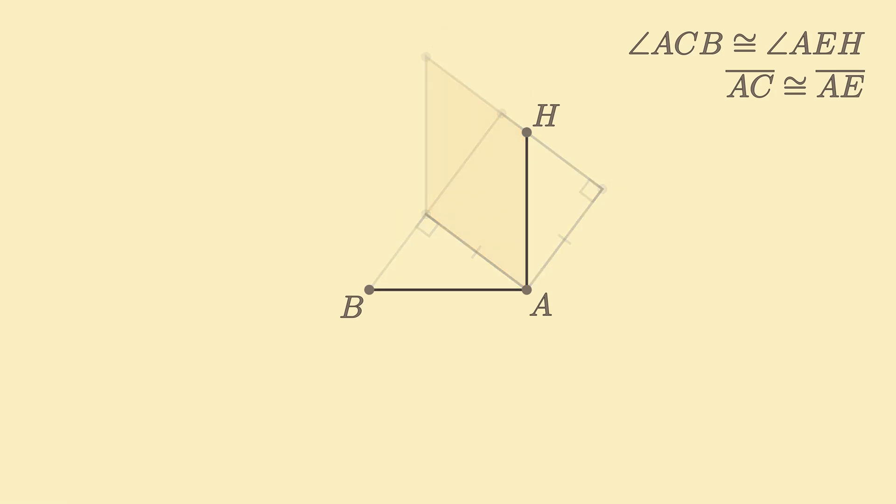Look at angle BAH. Since we sheared square AEDC until its left and right sides were perpendicular to AB, we know that angle BAH is 90 degrees. Adding segment AC, we find that angle BAH is split into two angles, angle BAC and angle CAH.